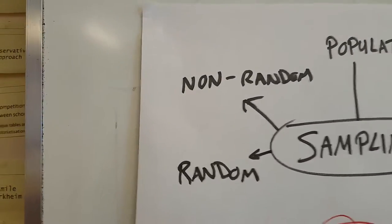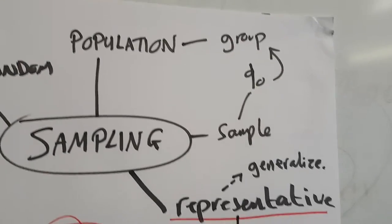You can highlight that there's a difference between random and non-random, and then it's all about the fact you can't survey the whole population, you've got to take a percentage of a particular group.